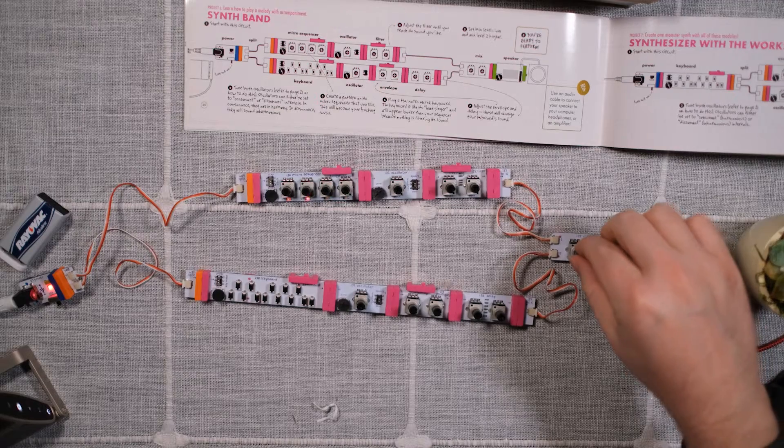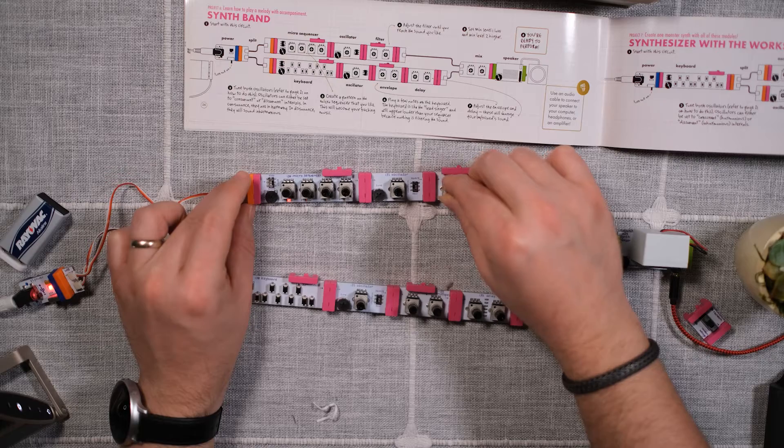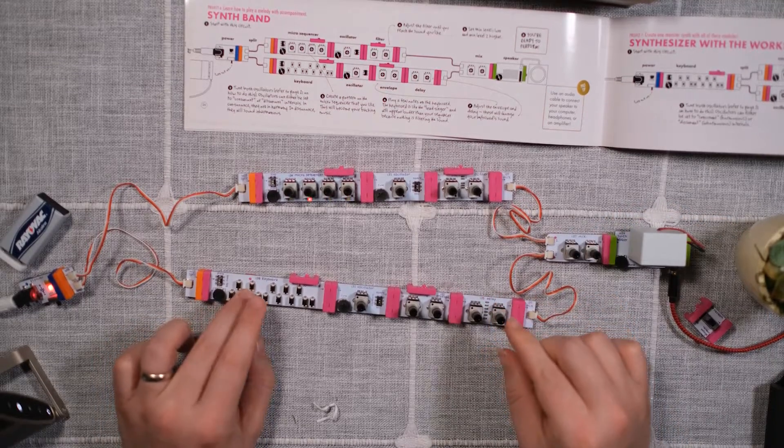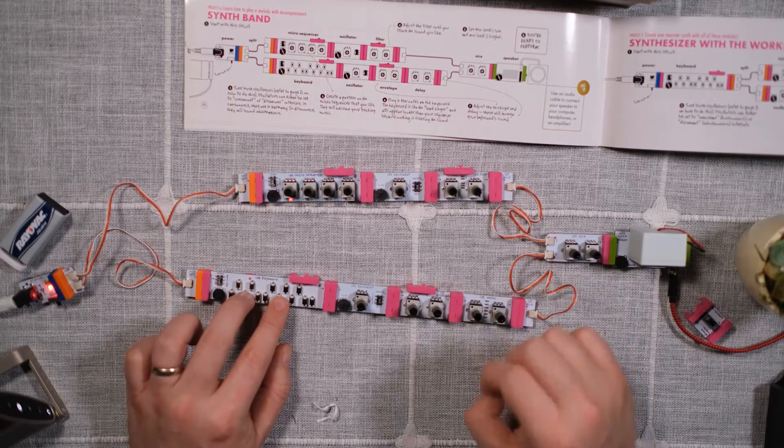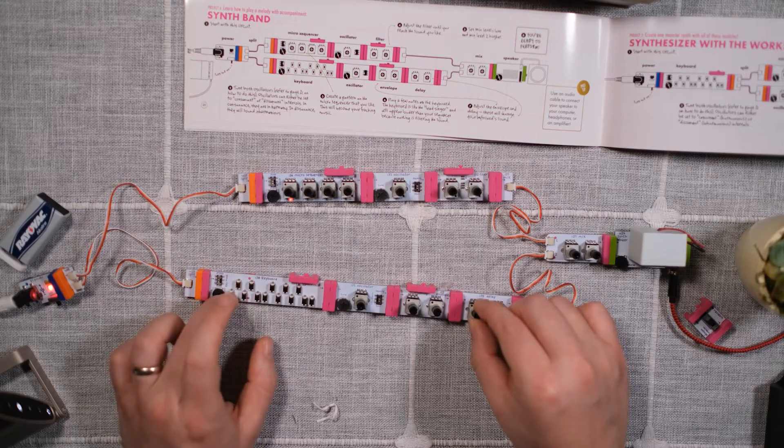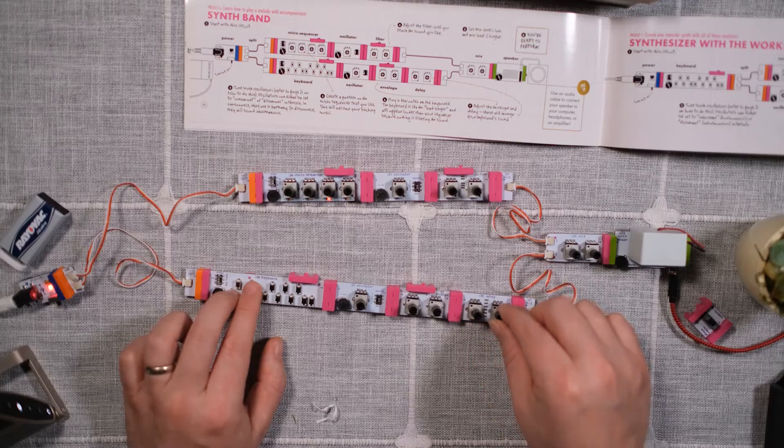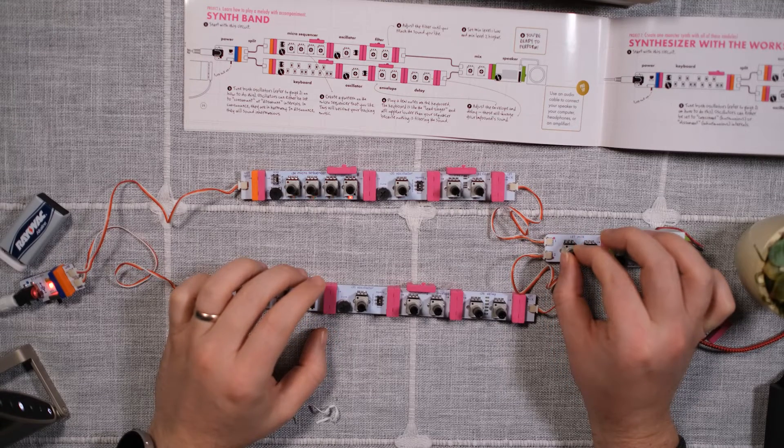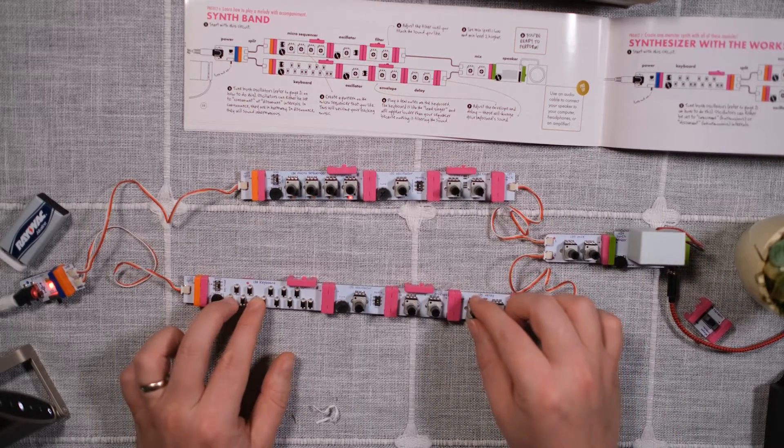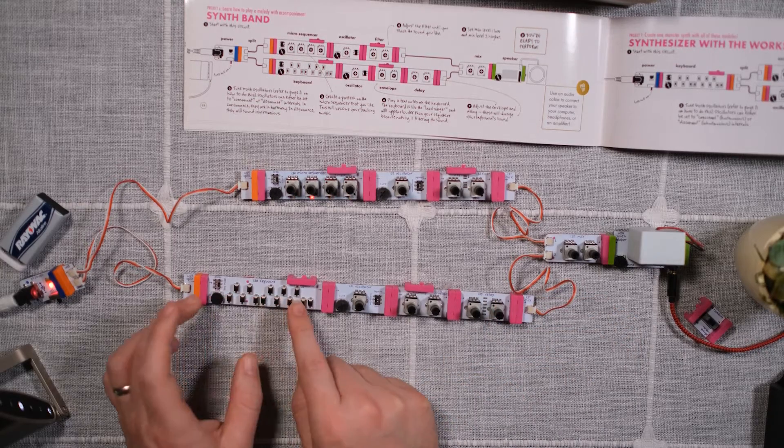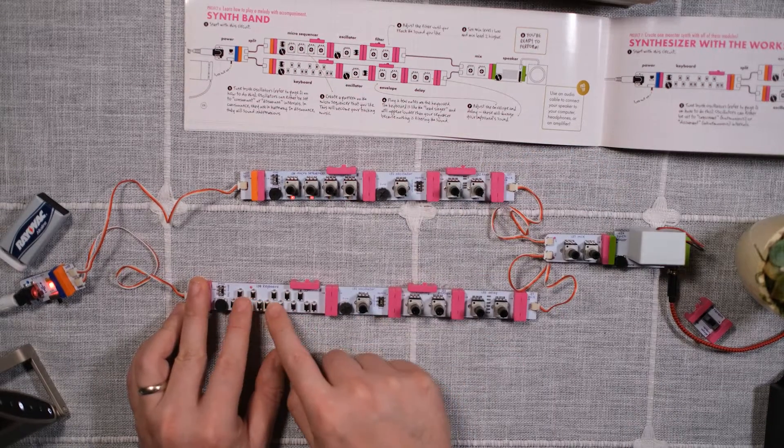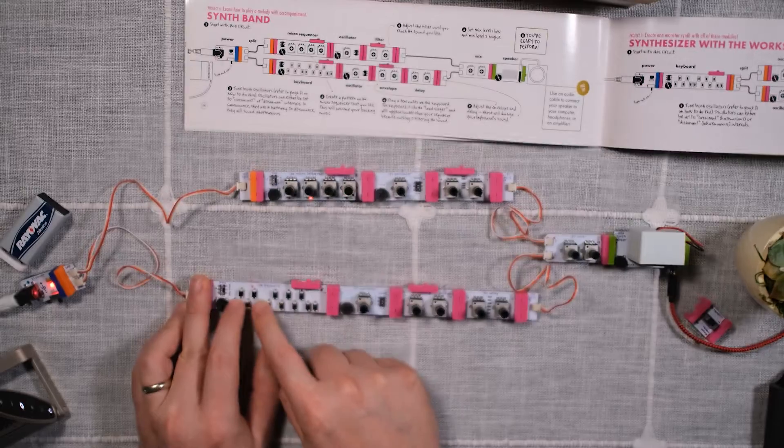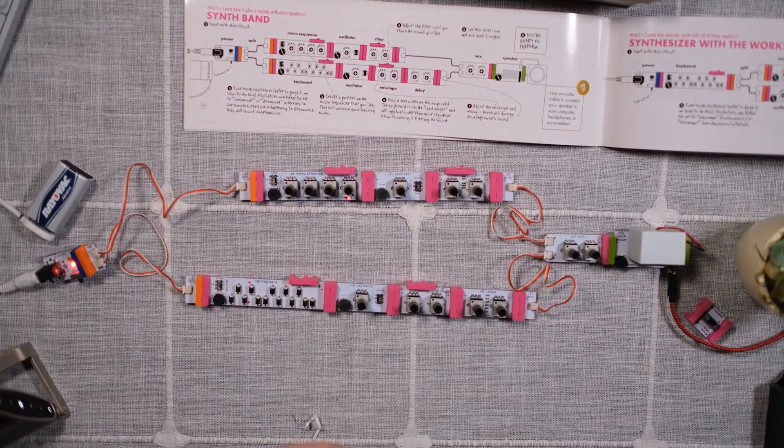So let's see how this works. Okay, so now we have the sequencer running here. We can modulate the filter to make it more or less audible. We can turn that down. We can turn up the keyboard. So now you can hear it's just dry, and then we can add in the delay. Now tune this oscillator so that this sequencer is playing a C major chord. You can hear what that sounds like. So now you have a little synth band.